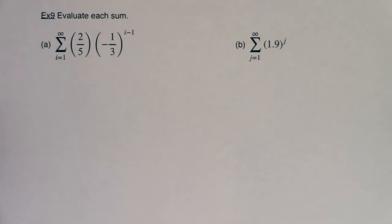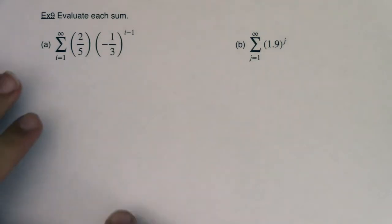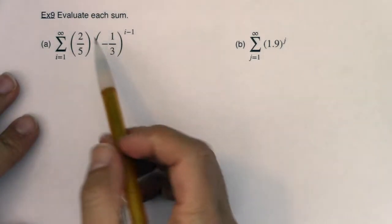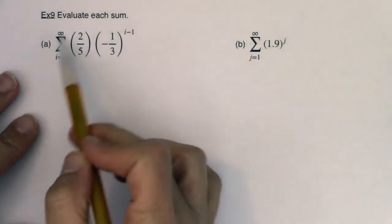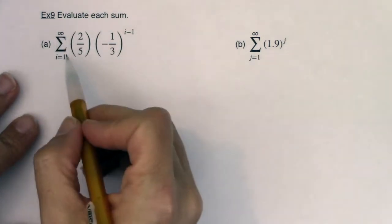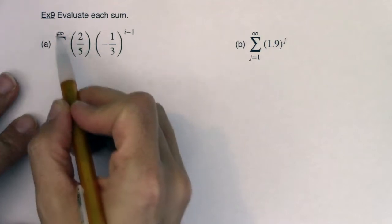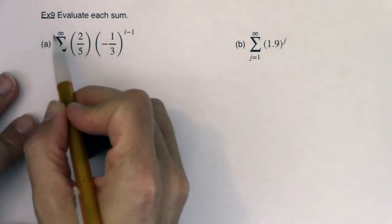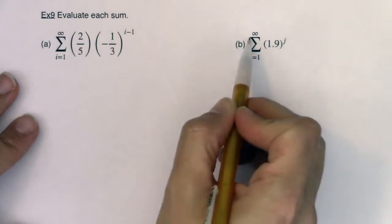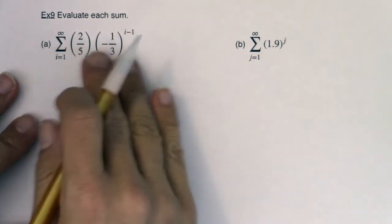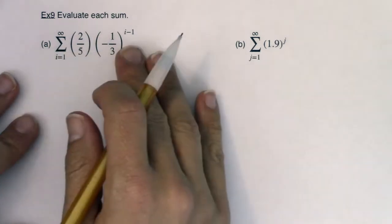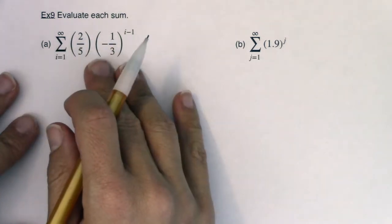Hey Math 31, welcome to example 9. We're going to take a look at a couple of infinite geometric sequences or geometric series and we're going to evaluate each sum. These are written in summation notation — I'm starting at 1 but going to infinity, so there's not a finite number up here. In both cases I'm going to infinity, so I have infinite series here, but it might not be super obvious that these are geometric yet.